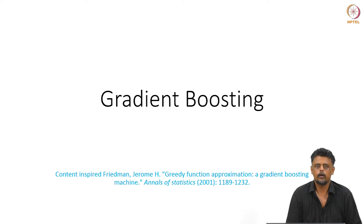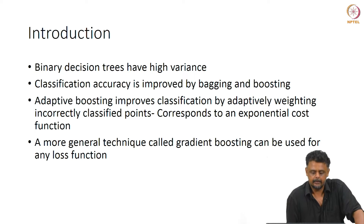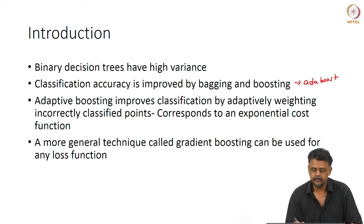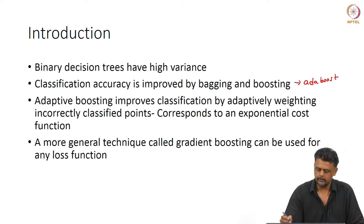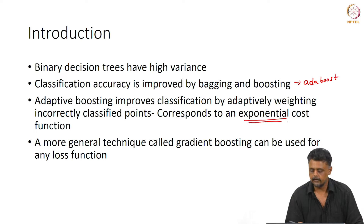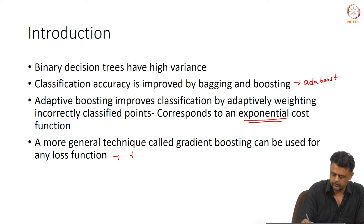Hello and welcome back. In this video we will look at gradient boosting. We have seen that binary trees have high variance and we have improved classification accuracy by bagging and AdaBoost. Adaptive boosting improves classification by adaptively reweighting incorrectly classified points in every iteration. We will show that AdaBoost actually corresponds to a special case of gradient boosting wherein we consider an exponential loss function. In this lecture we will look at this more general technique called gradient boosting — it can be used for any differentiable loss function.